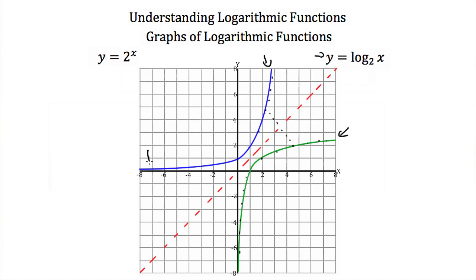Notice that our domain here is restricted. There's an asymptote for the exponential function — the x-axis — because the exponential function can never equal zero or become negative. When we reflect this asymptote across the line y equals x, we end up with a vertical asymptote. There's no x value we can plug in that's zero or negative, so our y value gets very large in the negative direction as we approach x equals zero. We can never have x equal to zero because that's outside the domain of our logarithmic function.